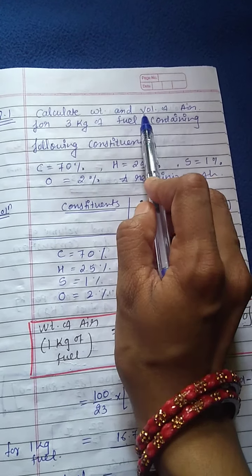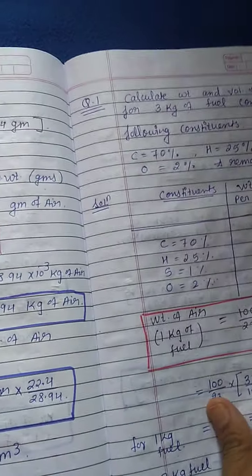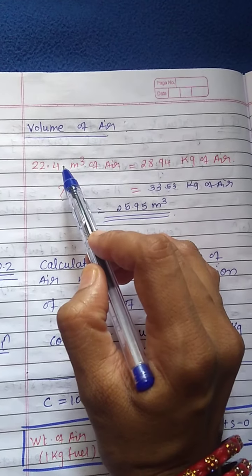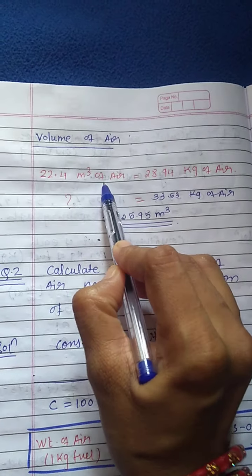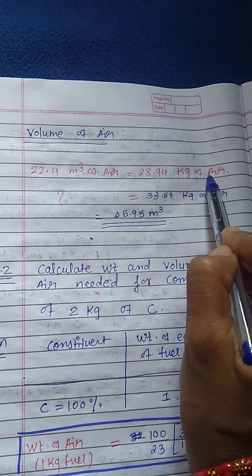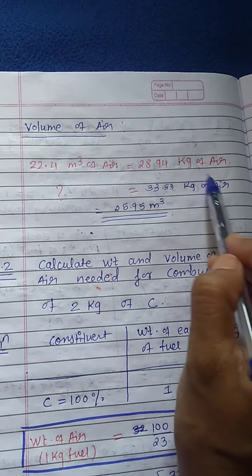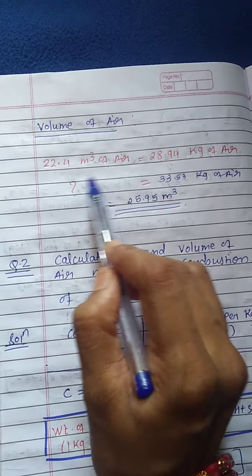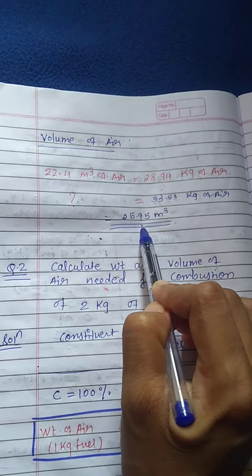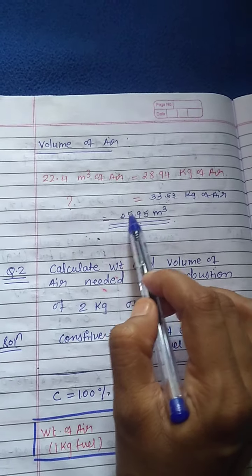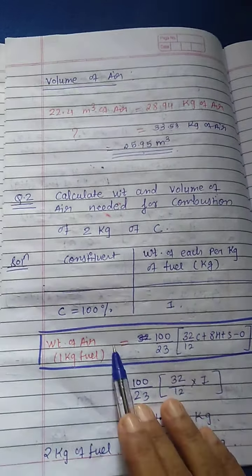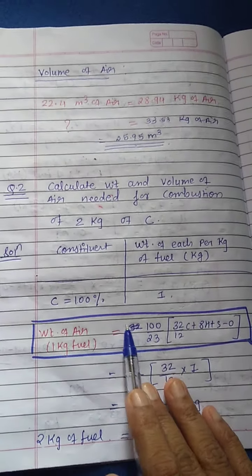Next, calculate volume of air using the relation: 22.4 m³ of air = 28.94 kg of air. Substitute the weight of air calculated and by cross-multiplying you get the volume of air. This is how we calculate volume of air.